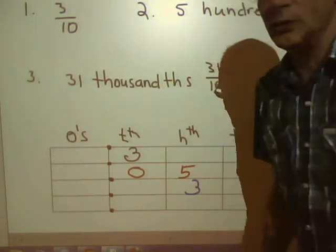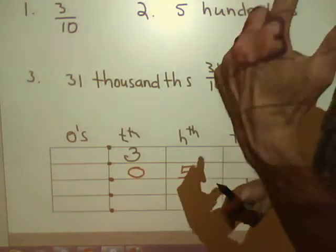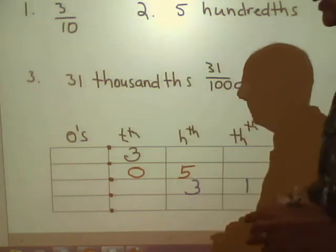So we need to take this three from the thirty and regroup it into the next column. Just like we do when we go one, two, three, four, five, six, seven, eight, nine, ten, regroup the one over and leave the zero in the ones column.